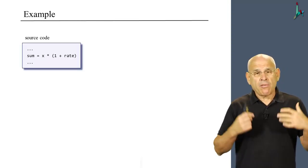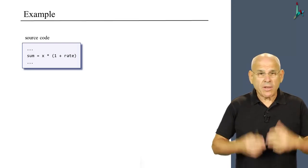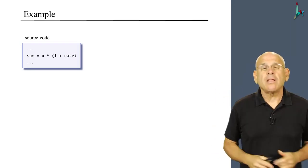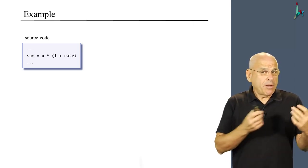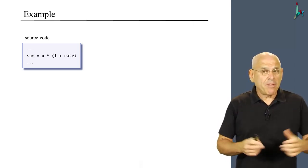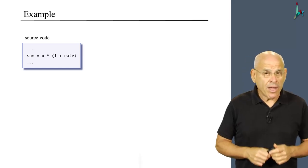So here's an example of a high level expression written in some typical high level language. And we see that in this particular expression, we have three variables: sum, x, and rate.